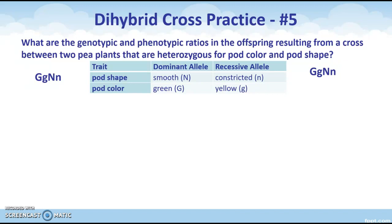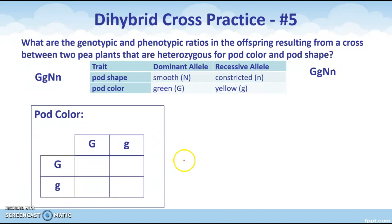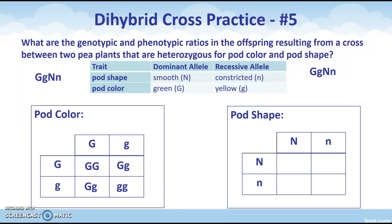In the last example we found all gametes and crossed them, but there's an easier way involving a little math. We're going to separate the traits and look at each one on its own. For pod color, both parents are capital G, lowercase g, so I set up a normal four-square Punnett square and cross them. I do the same for pod shape — both parents are capital N, lowercase n — and cross those as well.